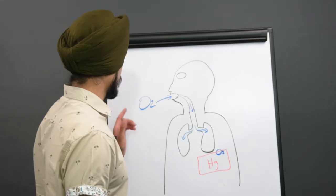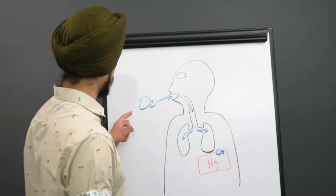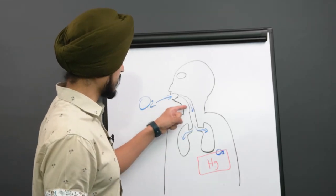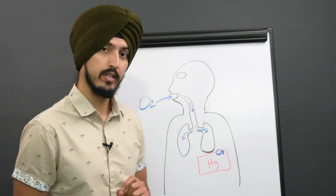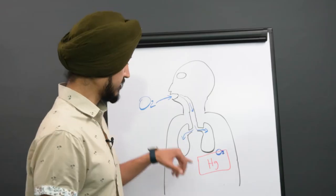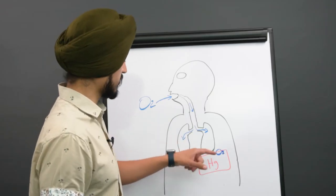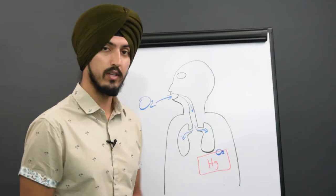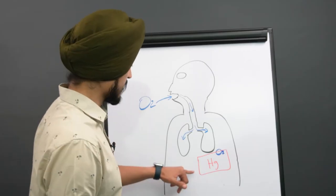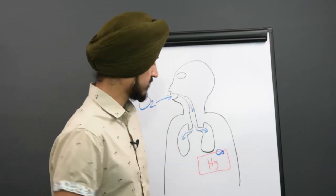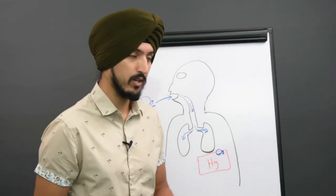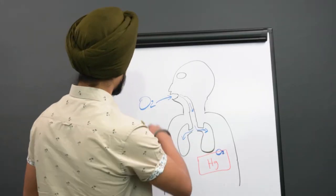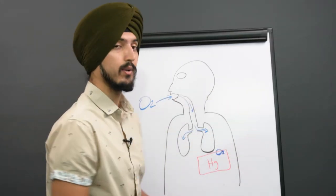Now you might be wondering how that's possible — you're breathing in oxygen from the air around you. When you breathe in, you get oxygen from the air, and this oxygen works its way to your lungs. When it gets into your lungs, this oxygen will attach to a molecule called hemoglobin. Hemoglobin is kind of like a train — it will take this oxygen as its passenger and start to deliver it to all of the cells in our body.